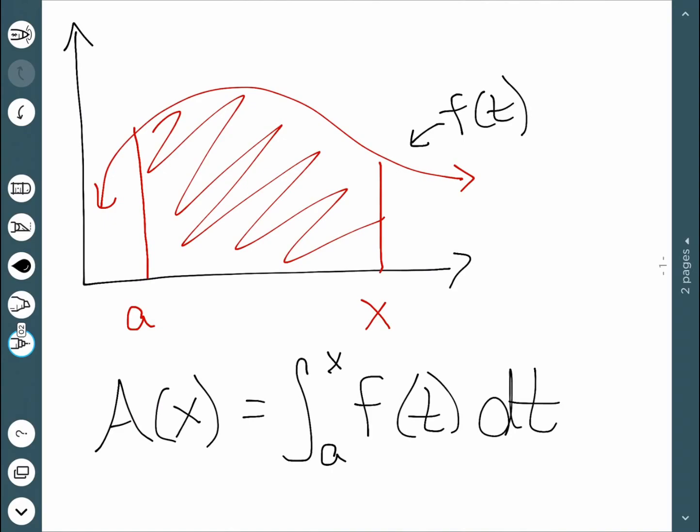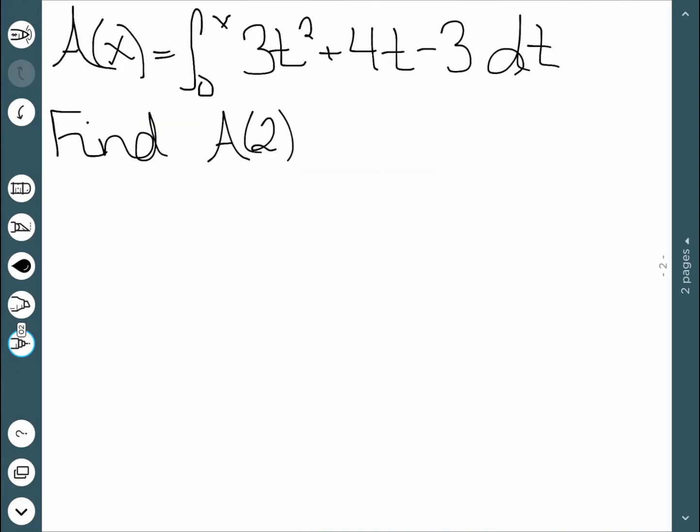So now let's see about doing some examples. Our first example, we're going to let A of x be equal to the integral from 0 to x of 3t squared plus 4t minus 3dt. And we want to find A of 2. So all I'm going to do is change the upper bound on this integral to a 2. So now I have the integral from 0 to 2 of 3t squared plus 4t minus 3dt.